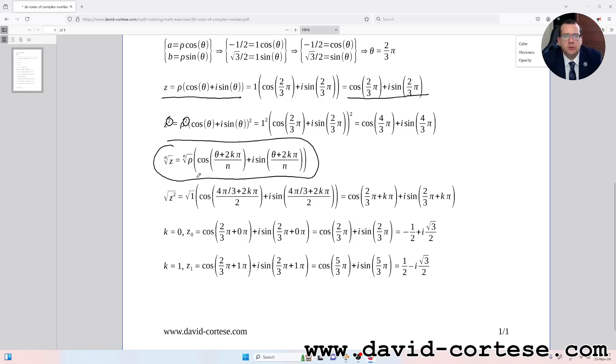So in this case, we use z squared that we have previously calculated. So root of z squared is cos(2π/3 + kπ) + i sin(2π/3 + kπ). We need to substitute the value k.